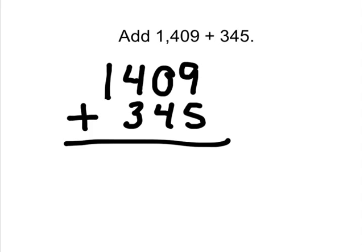So I've written it out and you can see that my ones place is lined up, my tens place is lined up, my hundreds are lined up, and my thousands are lined up.